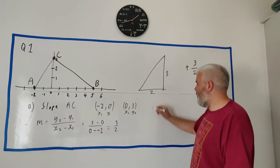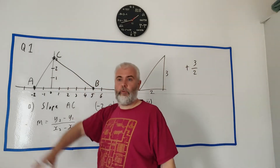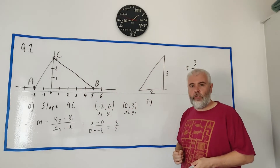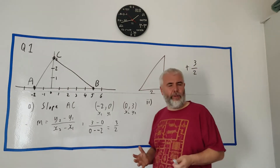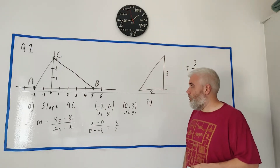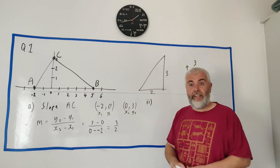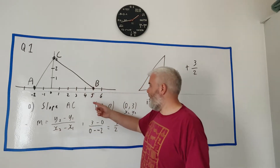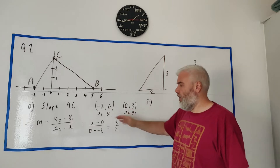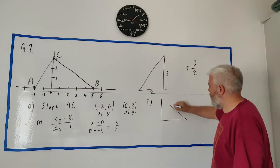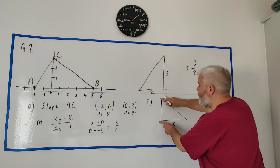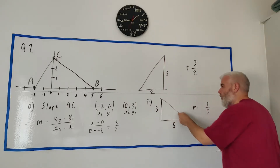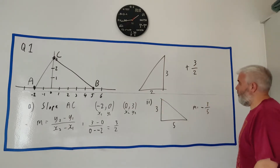For part A(ii), they ask about line AC and line BC and whether they are perpendicular. To check, we get the slope of both lines — if the two slopes multiply together to give -1, they're perpendicular. We already have the slope of AC. Now let's get the slope of BC using the triangle method. The points are B(5, 0) and C(0, 3). The triangle has length 5 and height 3, so slope = 3/5. But it's going downward, so it's a negative slope: -3/5.